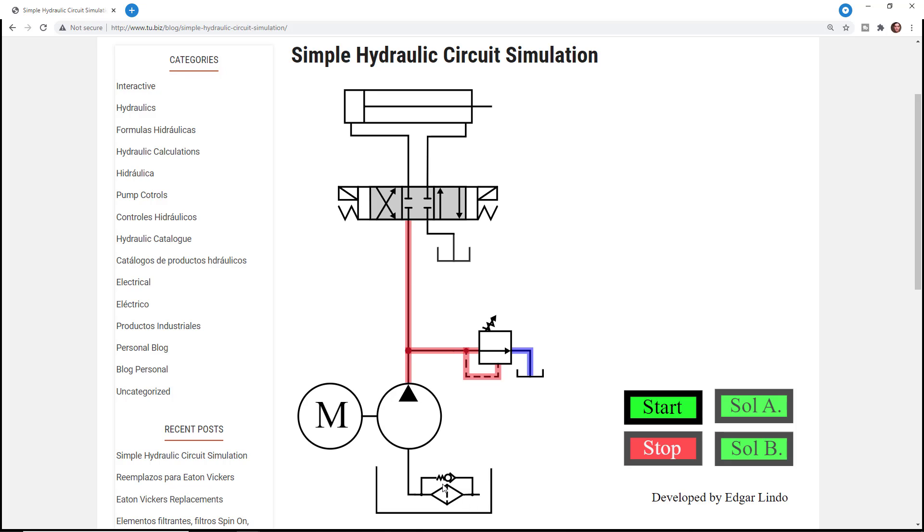In this circuit what you have is a suction filter with a bypass, fixed displacement pump, a motor, a relief valve, directional control valve, and a hydraulic cylinder.